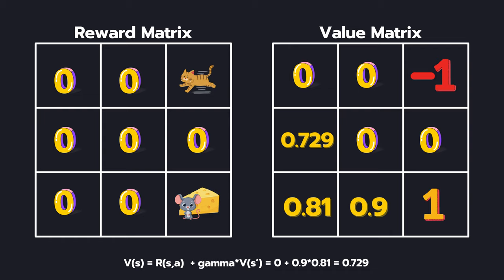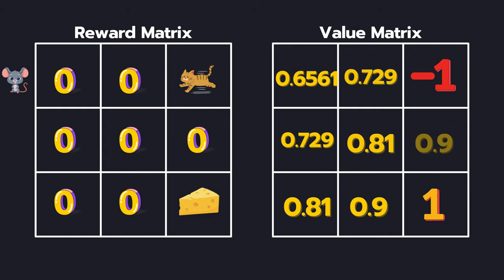Now, using similar logic, we can compute the value of all the states. As you can see here, the value of state 0,0 is 0.6561. Value of state 0,1 is the same as value of state 1,0. So, multiple states can have the same value and it's all calculated using Bellman equation. You see, it is recursive in nature. We don't need to know the value of all the states. We just need to know the value of the next state and this is what makes the Bellman equation so powerful.